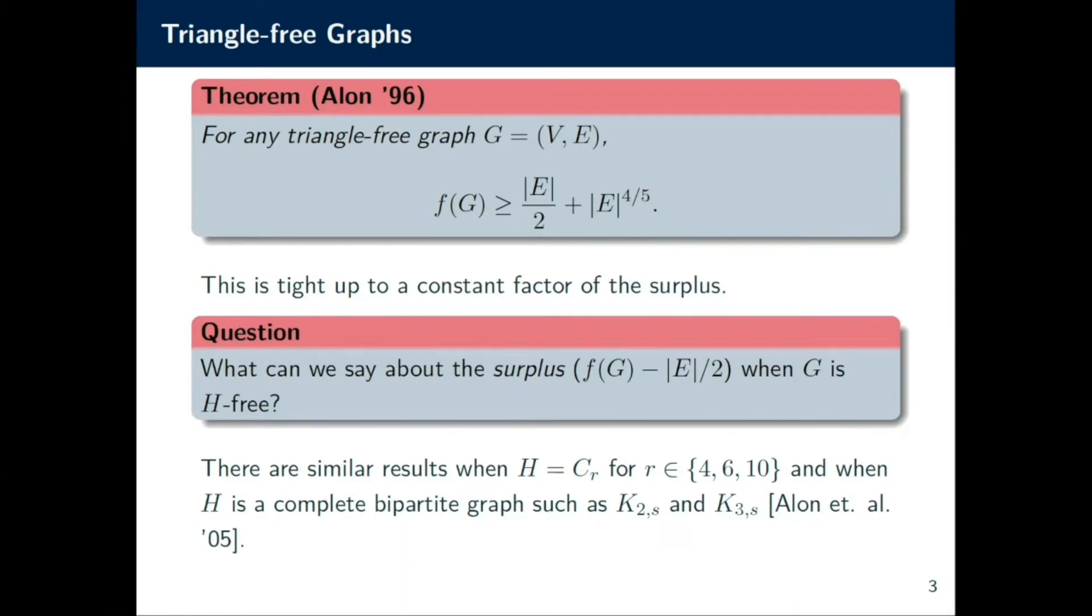One example of such a class of graphs would be triangle-free graphs. Alon showed in '96 that for any triangle-free graph, f(G) is at least |E|/2 + |E|^(4/5). They also showed that this is tight up to a constant factor in front of the second term, which we would call the surplus.